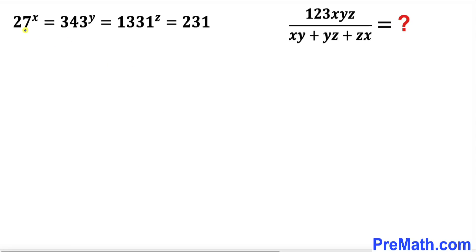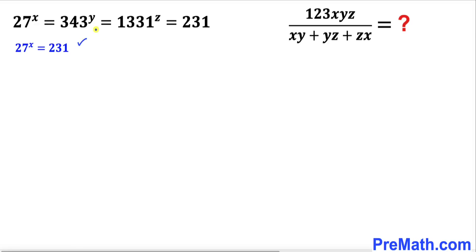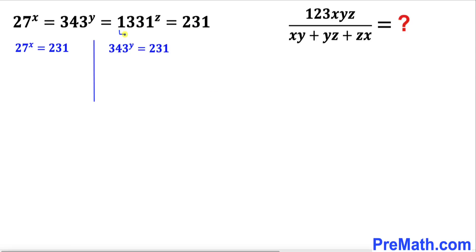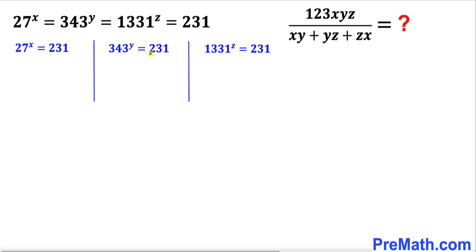Let's get started with the solution. First, let's focus on 27^x and 231 — we equate them. Then we equate 343^y and 231 as well. Finally we equate 1331^z and 231. Now let's manipulate these equations.